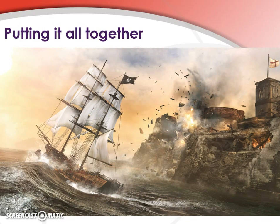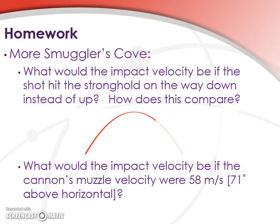Okay, so hopefully that gives you a good idea of how to get an impact velocity for a projectile. For your homework, please have a look at a couple more Smuggler's Cove problems. What would the impact velocity have been for our cannonball if we had hit the stronghold on the way down instead of up? So here's the diagram here. How does this velocity, impact velocity, compare if we hit it on the way up at the same height? Please have a look at these. This should help you to better understand projectile motion.